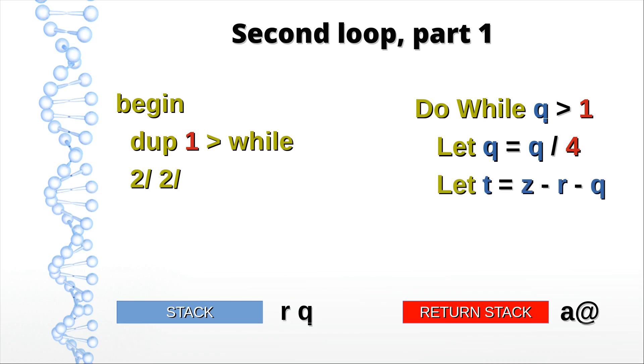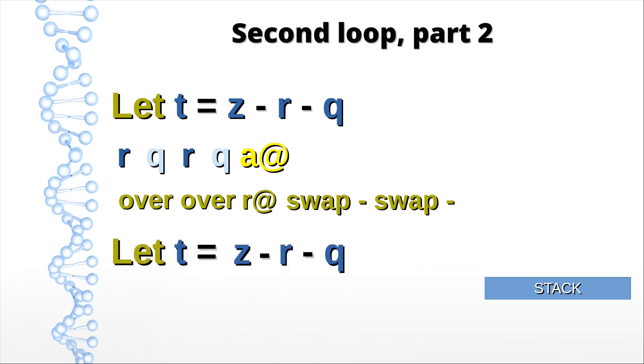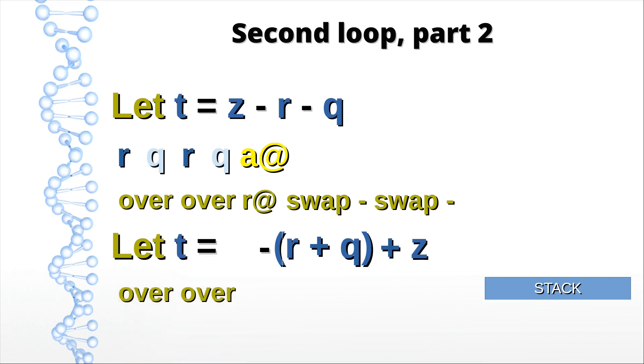And now we get to a tricky one. Let's see. Now variable t has to be calculated, and it gets quite crowded on the stack. If we do it as advertised, we copy r and q and bury them under z and subtract them both. But we can make our lives a whole lot easier by slightly transforming our expression. We still have to copy r and q. We add and then negate them. Get z and add it to our sum.